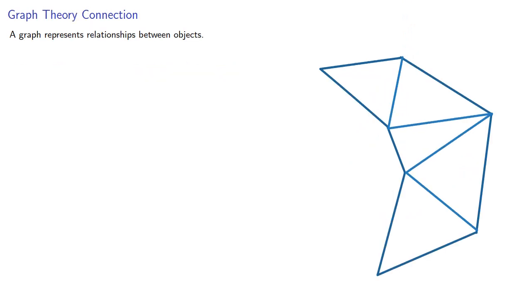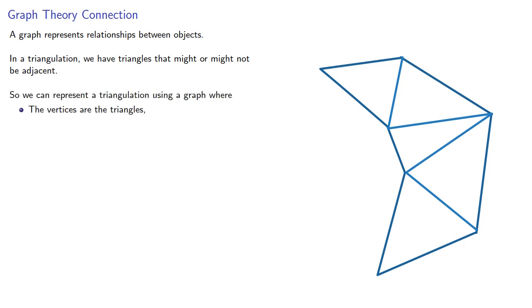Remember, a graph represents relationships between objects. In a triangulation, we have triangles that might or might not be adjacent. So we can represent a triangulation using a graph where the vertices are the triangles and the edges represent a connection between the triangles. One possibility is to draw an edge between two vertices if the corresponding triangles are adjacent.